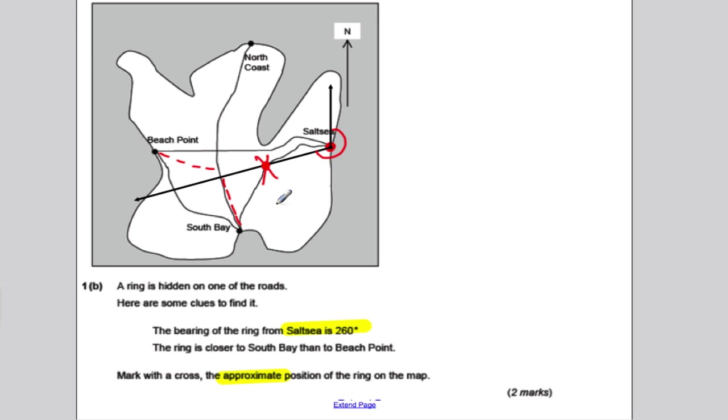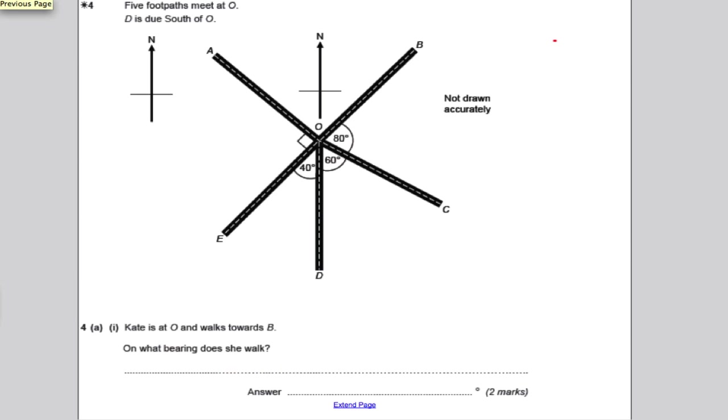Next question on bearings. Pause the video, have a go, and mark your work in 10 seconds when I go through. It talks about five footpaths meeting. It says D is due south. So this here is due south. Now, a couple of things we can do. Let's go straight to the question, then I'll fill in after. Kate is at O. Kate's here. On what bearing does Kate walk if she wants to walk towards B there?